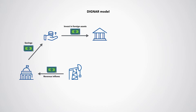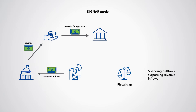In contrast, when there is a fiscal gap — that is, when outflows surpass revenue inflows — withdrawals from the fund can help finance this gap. But there is an imposed minimum level of savings. When this minimum level binds, borrowing is needed to cover the gap.